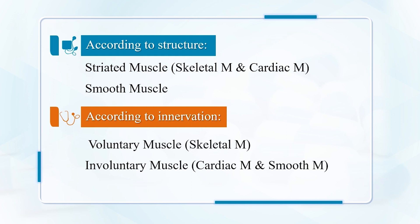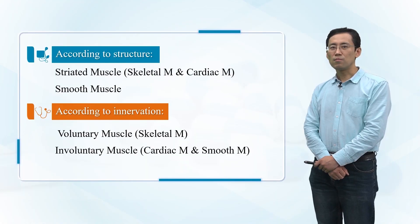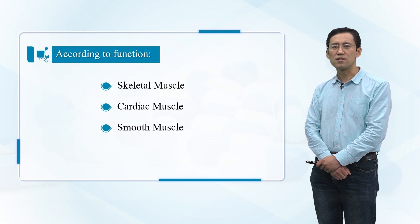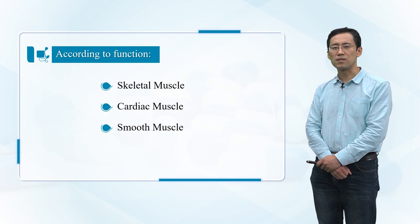According to structure, muscles can be classified into striated muscles, including skeletal muscles and cardiac muscles, and smooth muscles. According to innervation, they can be classified as voluntary muscle (skeletal muscle), involuntary muscle (cardiac muscle), and smooth muscle. According to function, they are classified as skeletal muscle, cardiac muscle, and smooth muscle.